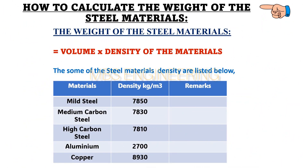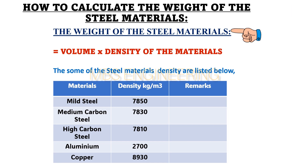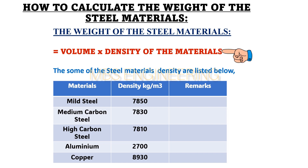We learn about how to calculate the volume and weight of mild steel materials. The weight of mild steel materials can be calculated by multiplying the volume of the material by its density.